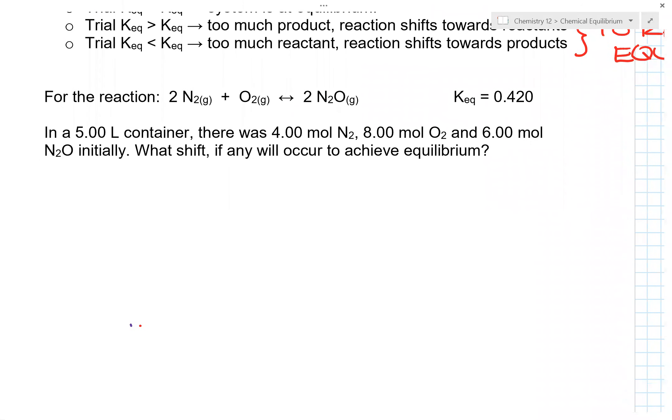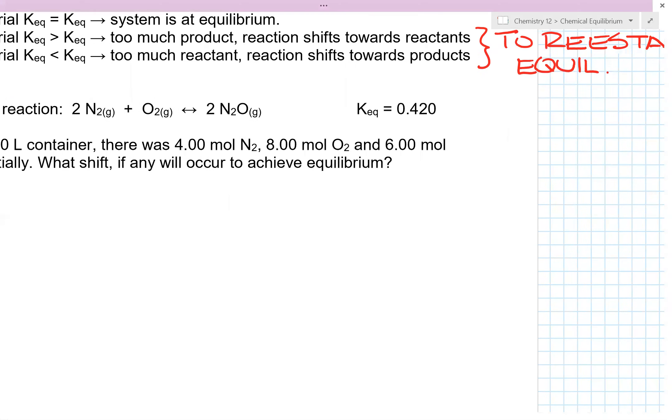Now, what do I mean by this? So let's say for example, we have 2N2 plus O2 gives you 2N2O. In a 5-liter container, there was 4.00 moles of N2, 8.00 moles of O2, and 6.00 moles of N2O initially. What shift, if any, will occur to achieve equilibrium?